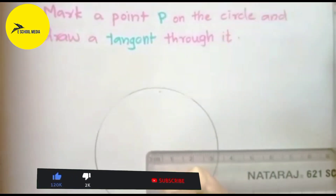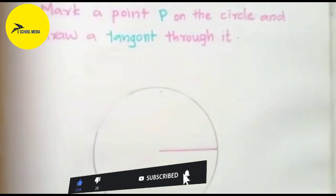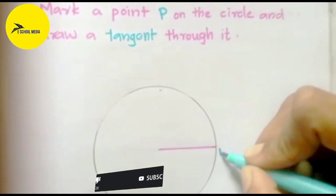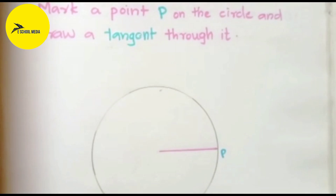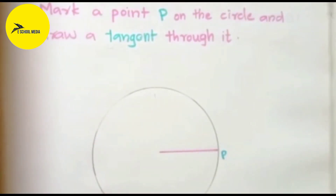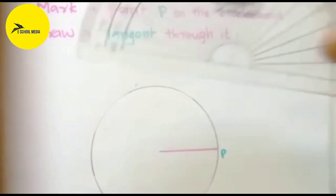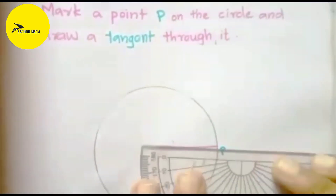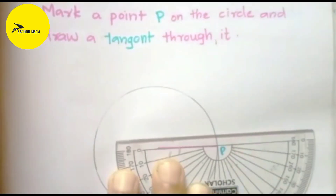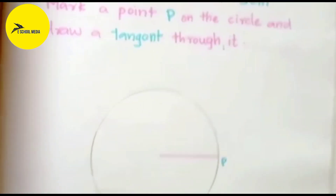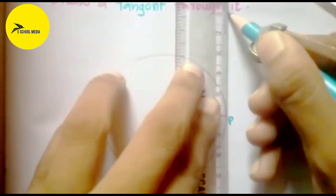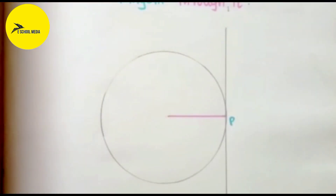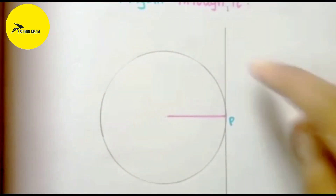We are going to mark a point P on the circle. The point is 90 degrees perpendicular to the circle of radius. The line is going to join the circle of radius. We will draw the tangent.